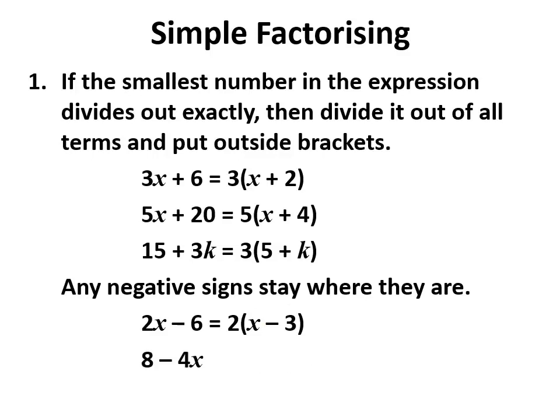In another example, this time 4 is the smallest number. It goes into 8 twice, so after we remove the 4 we are left with 2 and minus the x, because when we multiply that back in we get minus 4x.